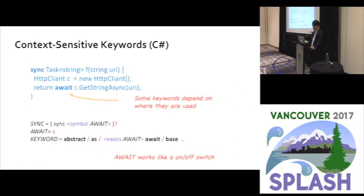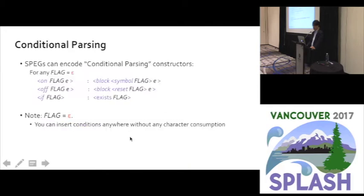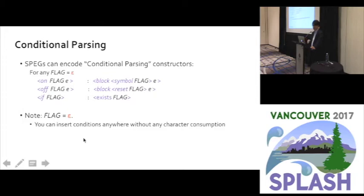The last example is a more recent parsing problem called context-sensitive keywords, where some keywords — in this case 'await' — depend on whether they are used inside an async context. Here we use 'await' as a flag to switch parser behavior: turning on 'await' and testing whether 'await' is true. This on-off switch is a very useful grammar idiom we call conditional parsing, and SPEG can encode conditional parsing constructors. Importantly, a flag is an empty string, so you can insert conditions anywhere without any character consumption.